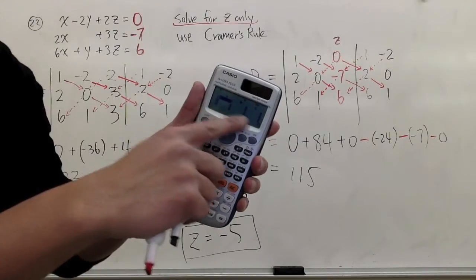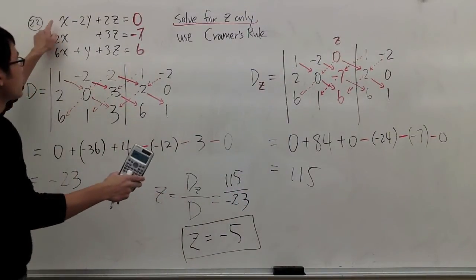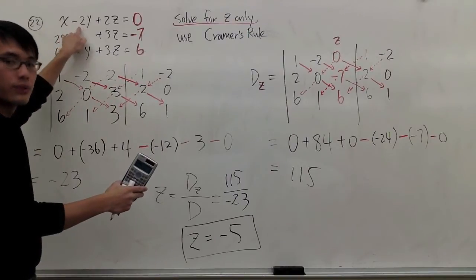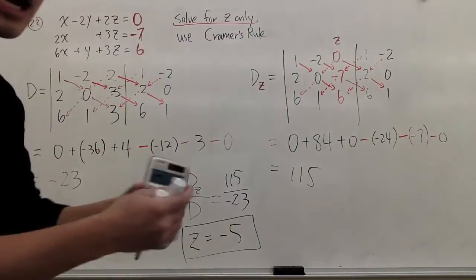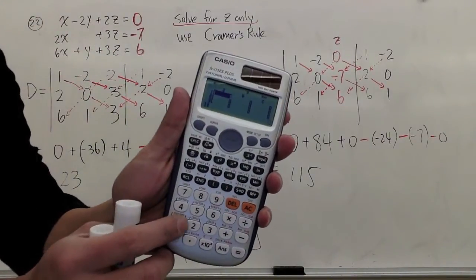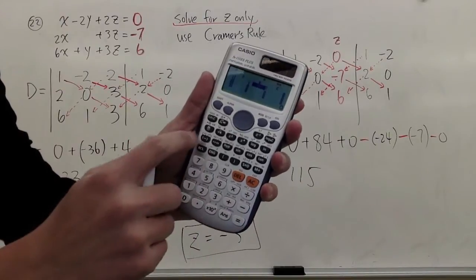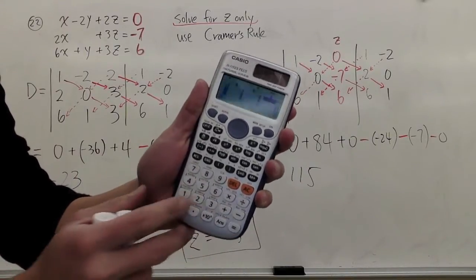And it's going to ask you to punch in a lot of numbers. And the way to do it is, we're going to punch in 1, negative 2, 2, and 0 for the first row. That's how we tell the calculator what our equation is. So, 1 equals negative 2, and we have 2 and 0.